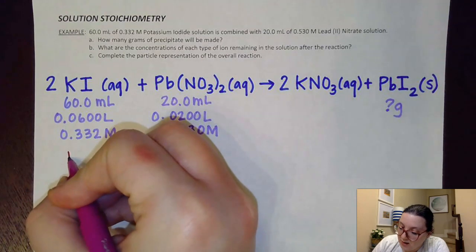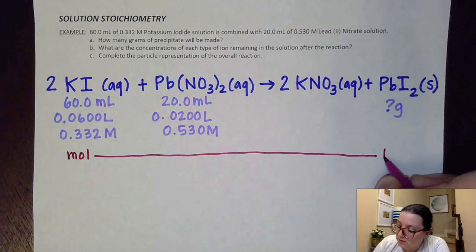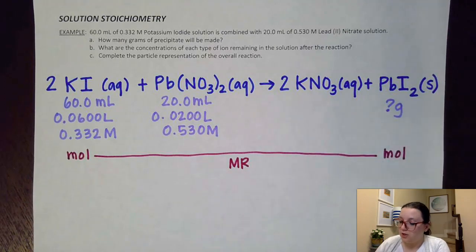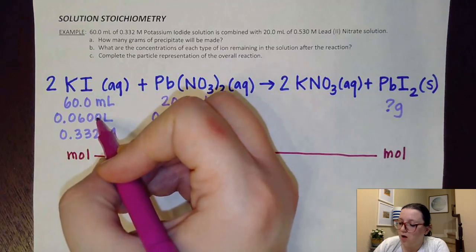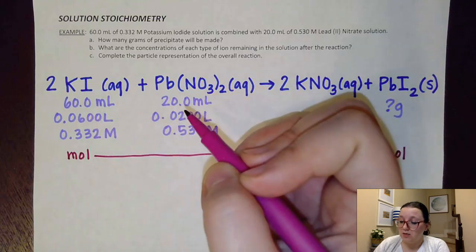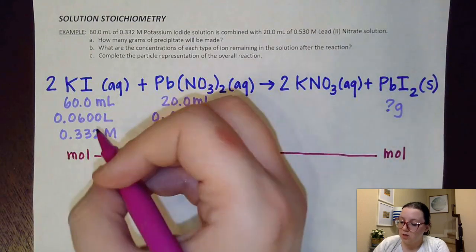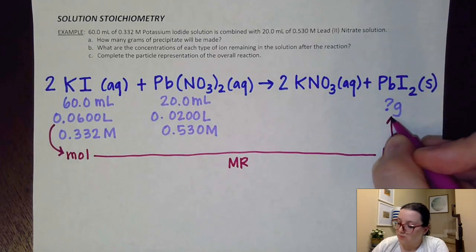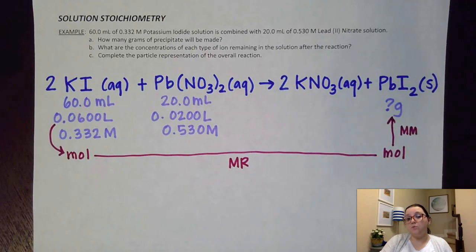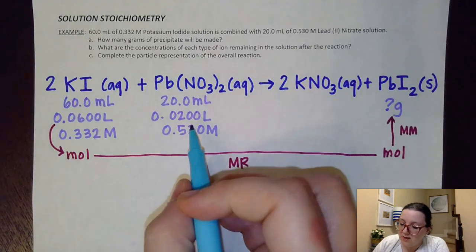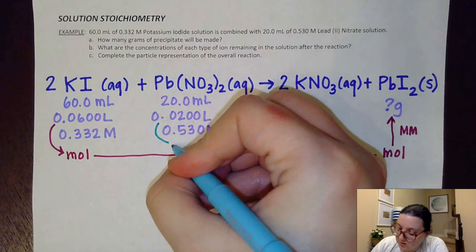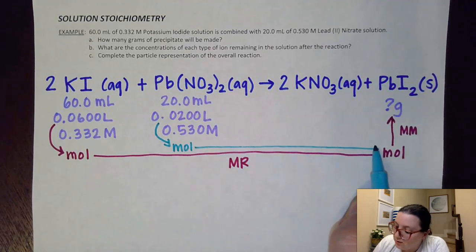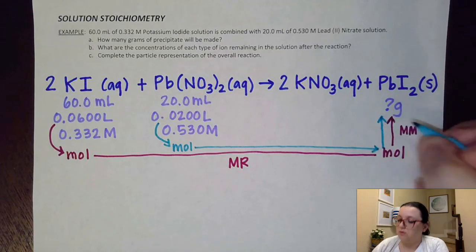For potassium iodide, I need a mole-to-mole ratio step to PbI₂ using the coefficients — the mole ratio. I'll use the volume and molarity to get into moles, then convert moles into grams using the molar mass. I'll set up a similar map for lead nitrate: liters to moles using molarity as a conversion factor, then a mole-to-mole ratio to PbI₂, then moles into grams using molar mass.